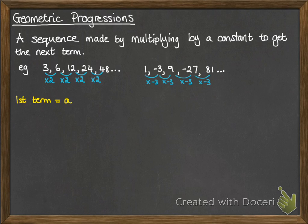So some terminology. Our first term we call a, the same as we did with arithmetic progressions. But this time we're talking about the common ratio when we're talking about the difference between the numbers. So that's this number here, the multiplier that you use to create your sequence. And that is referred to as r, for ratio.